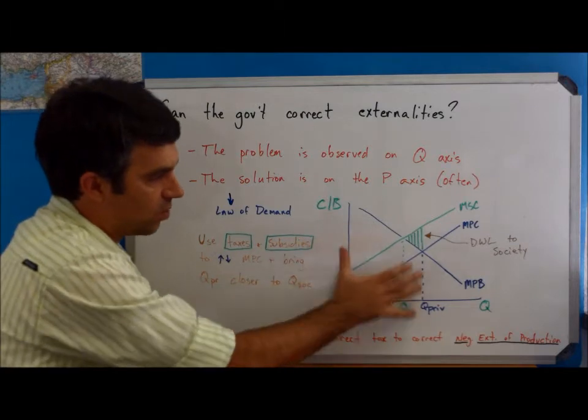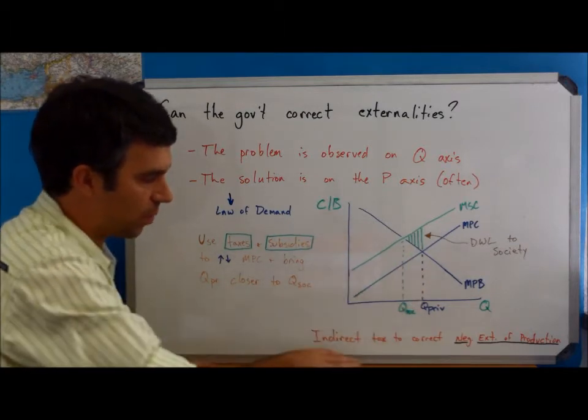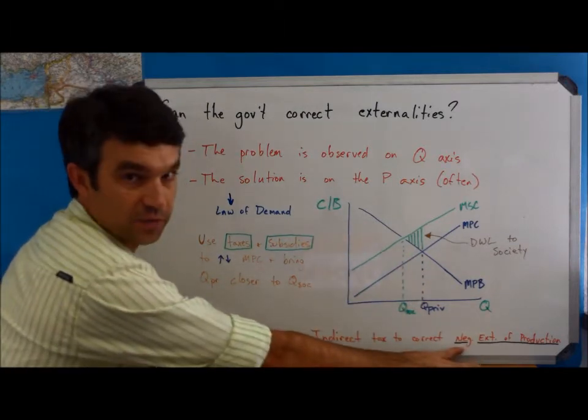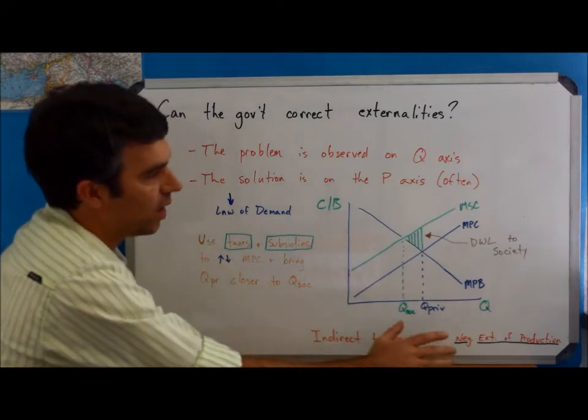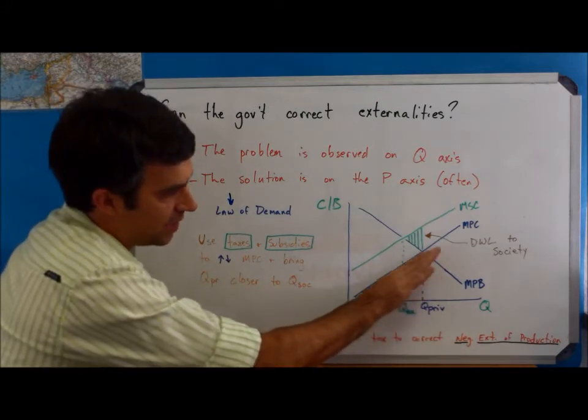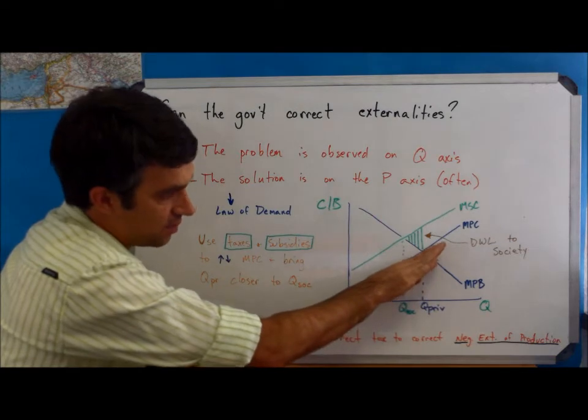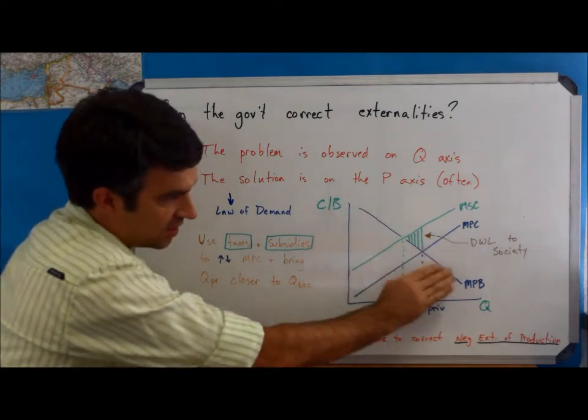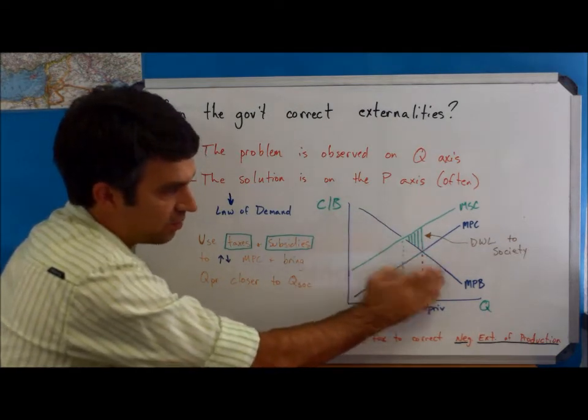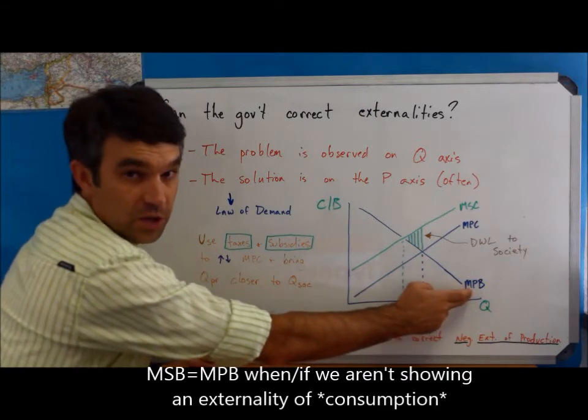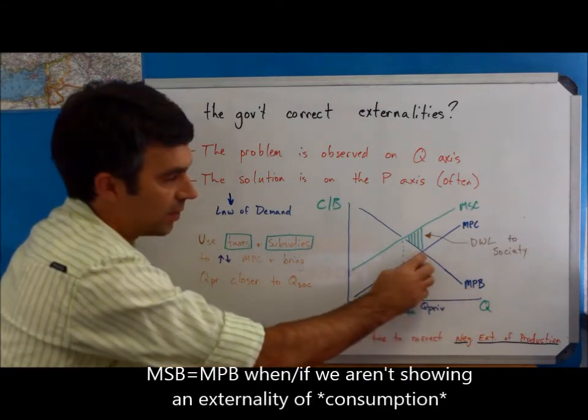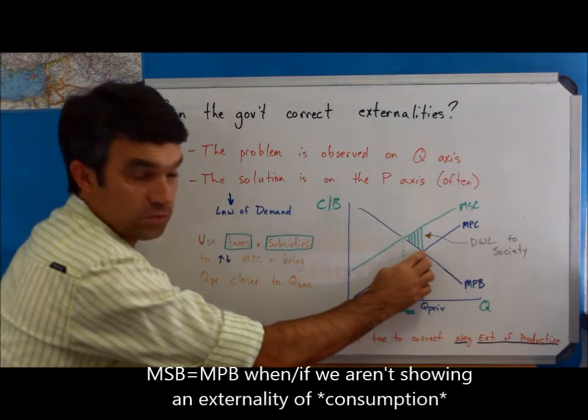If we look at what's going on in the diagram here, where we have a negative externality of production, what we can see is that basically the costs, the private costs are intersecting the marginal private benefit curve. Remember this is also equal to marginal social benefit. They're intersecting this curve too low.